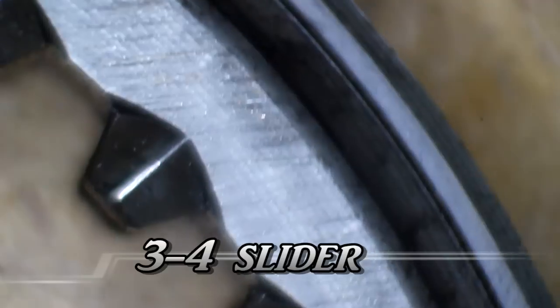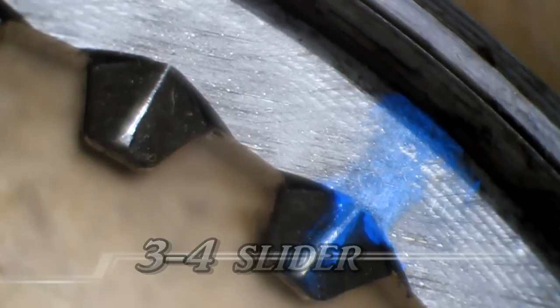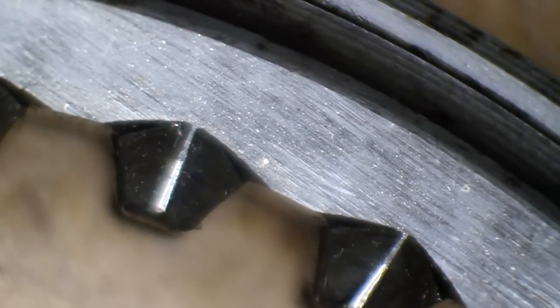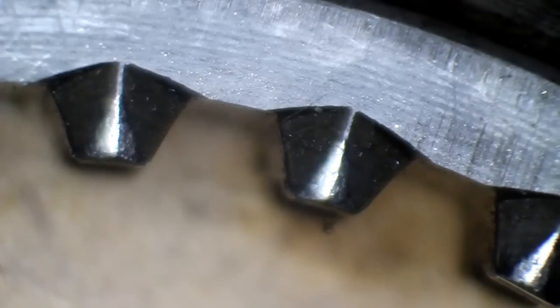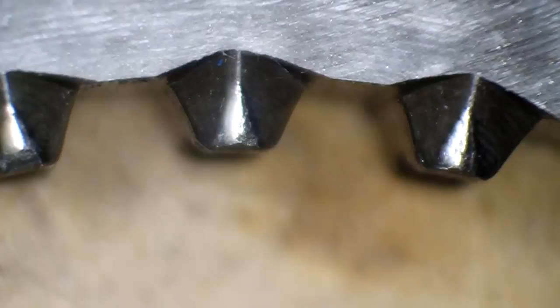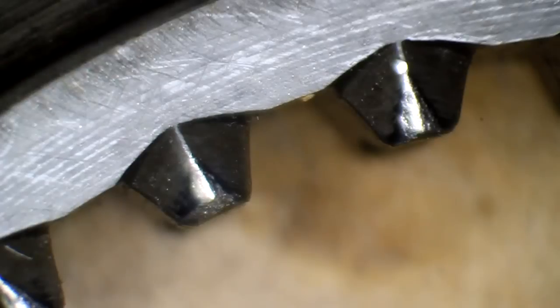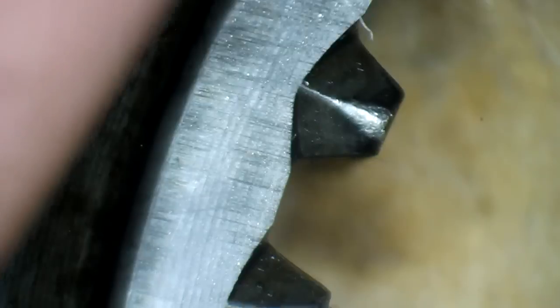Here we're taking a look at the teeth on the slider hub for third and fourth. I believe, but I'm not sure, that this is the fourth gear side. Its teeth are in pretty good shape, a little bit flattened. Occasionally one will be beat up. That one there's got some paint on it, but generally in good shape. But if we flip it over and look at the third gear side, at least what I think is the third gear side, we can see they're rounded. There's some pitting. Rounded, rounded, rounded. A little bit of pitting there. Again, this is what we think is the third gear side. There's some chunks missing, pitting. Something we're going to try to replace if we can.